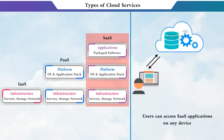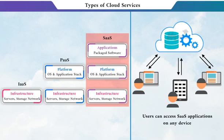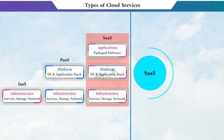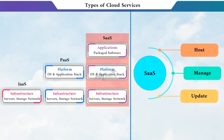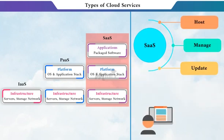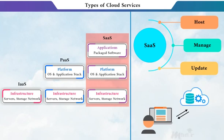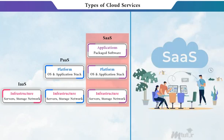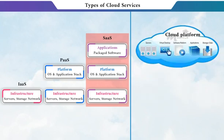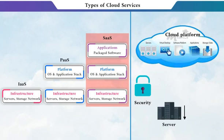The SaaS model allows the software to be accessed via a mobile app or a web browser. The service provider hosts, manages, and updates the software as needed, while the user logs into the app over the internet to use it. Consider Gmail, where you can send and receive emails without worrying about what's going on in the background. You don't have to care how the platform works, what security risks are involved, what happens if the server goes down, or where the message is kept.